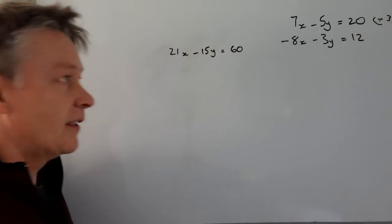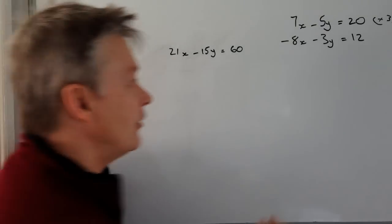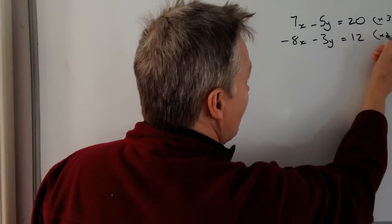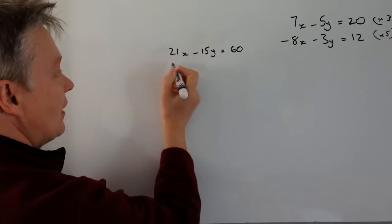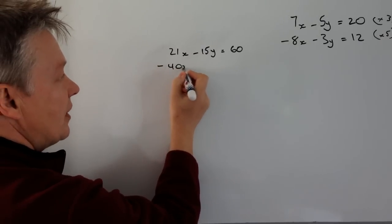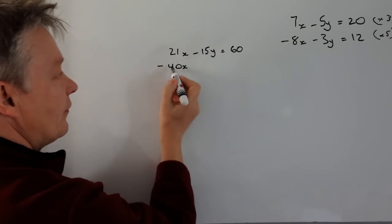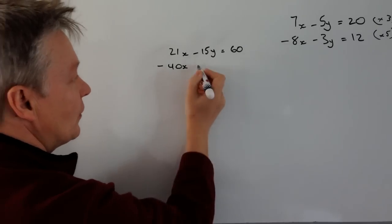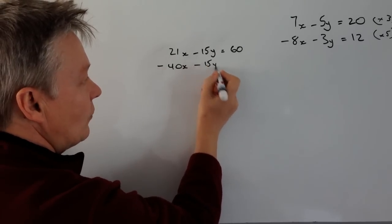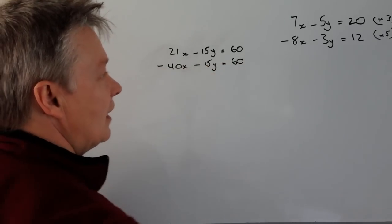The second equation I'm going to multiply through by 5, because if I do that, it means then that I get minus 40x, because minus 8 times 5 is minus 40, minus 15y, and then 60 again.